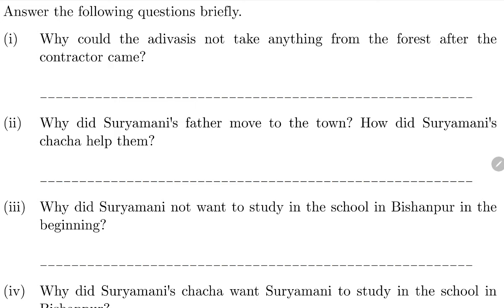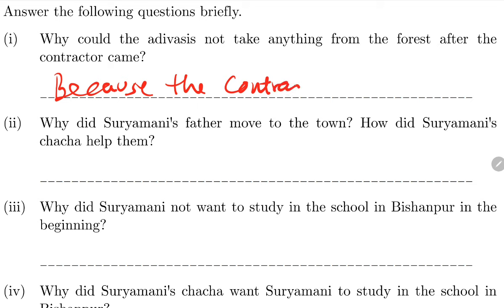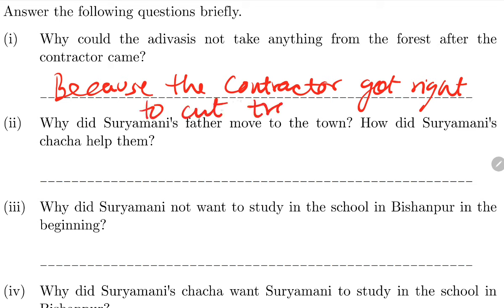Why could the Adivasis not take anything from the forest after the contractor came? Because the contractor got the right to cut trees from the forest department, so Adivasis lost access to forest products.